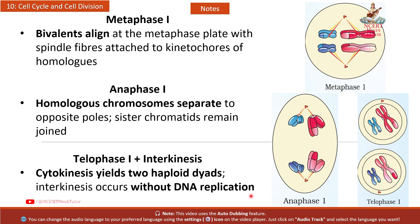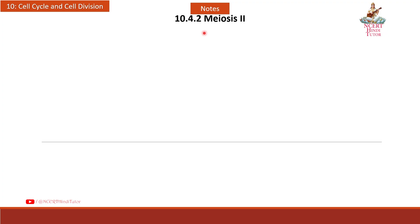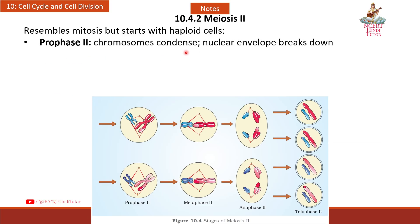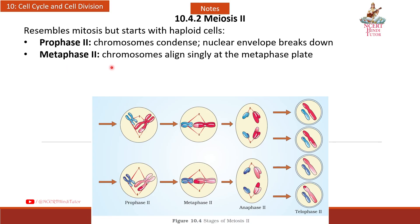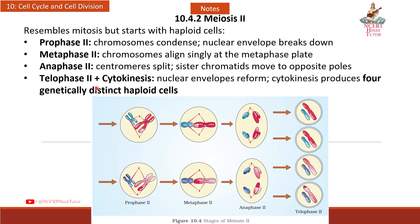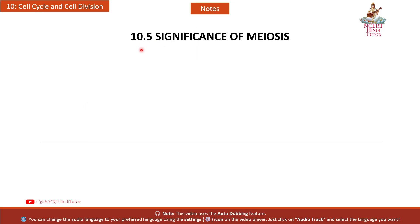10.4.2 Meiosis II: Resembles mitosis but starts with haploid cells. Prophase II — chromosomes condense, nuclear envelope breaks down. Metaphase II — chromosomes align singly at the metaphase plate. Anaphase II — centromeres split, sister chromatids move to opposite poles. Telophase II plus cytokinesis — nuclear envelopes reform; cytokinesis produces four genetically distinct haploid cells.